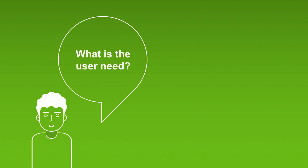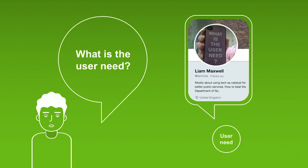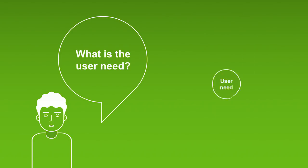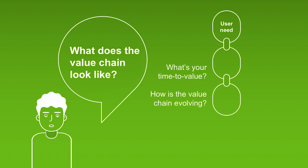Next question: what's the user need? A good friend of mine, Liam Maxwell, who was the CTO for the UK government for a while, actually put it on the back of his cell phone so that he could hold it up in meetings and keep getting back to: what really is the user need? What are you optimizing for? So if you start off with the user need, then there's a value chain behind that need.